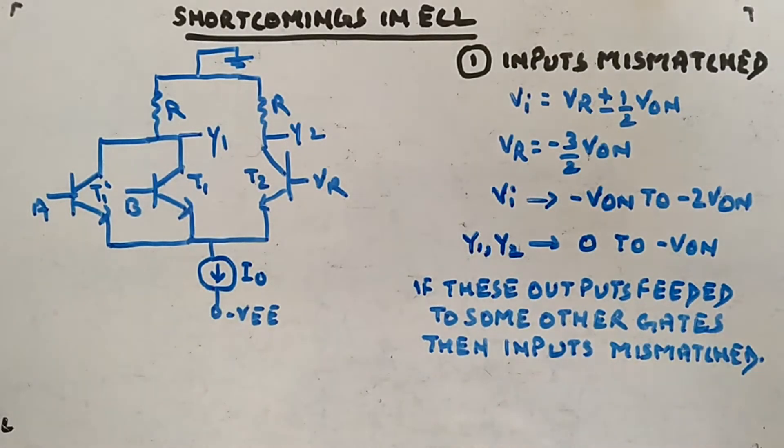Now let's look at the shortcomings of ECL. I'll tell you how to overcome those shortcomings and make a modified emitter coupled logic circuit. That's what we are going to do now.